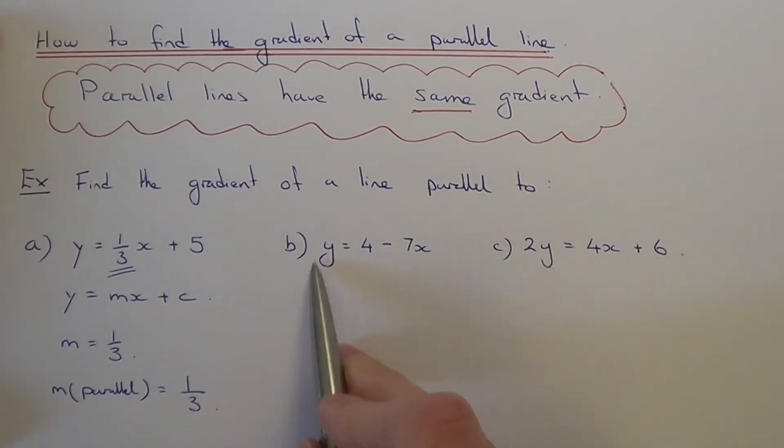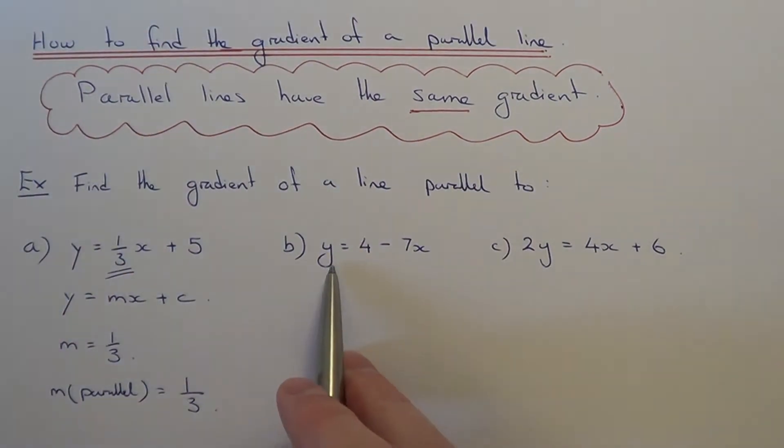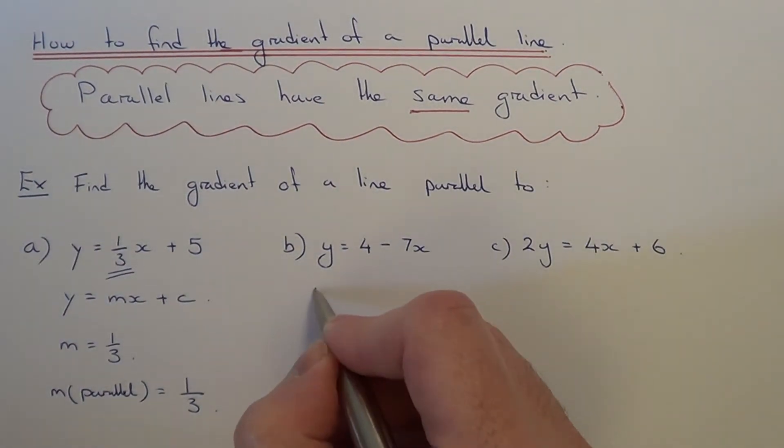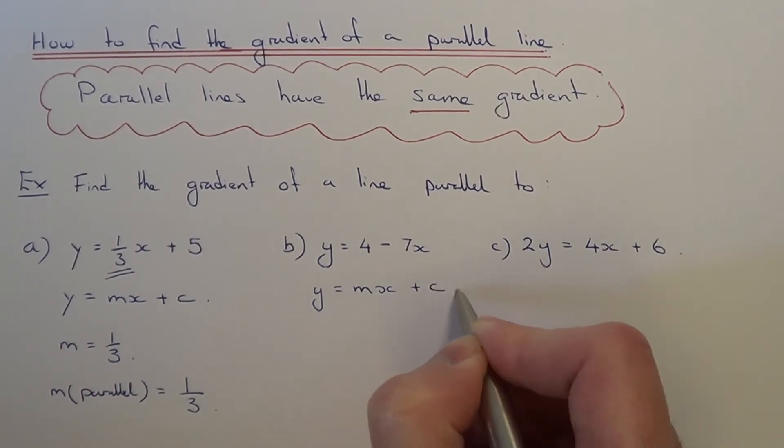Let's have a look at the second example. This time we've got to find the gradient of a line parallel to y equals 4 minus 7x. Again, we've got to make sure the first line is in the form y equals mx plus c.